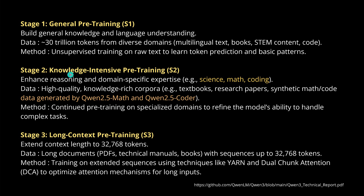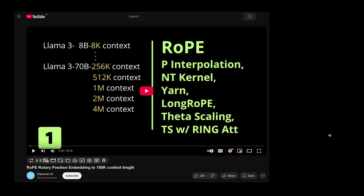For handling real long augmentation chains, they increased context in stage three to 32K tokens using long documents, PDFs, technical manuals, and books with sequences up to 32K. They applied technologies like YaRN or Dual Chunk Attention to optimize attention mechanisms for these long inputs. There's a specific video available explaining RoPE, LongRoPE, data scaling with ring attention, and YaRN in detail.